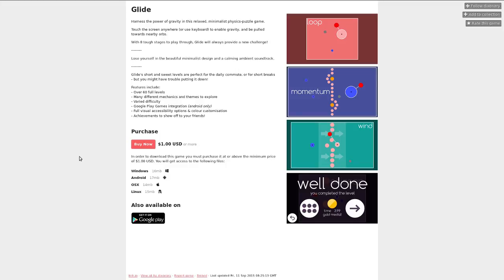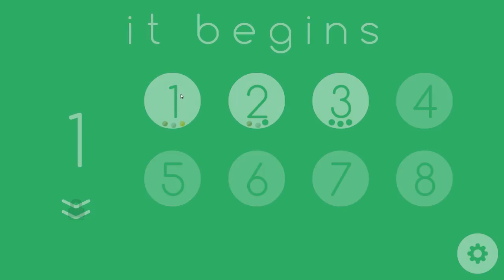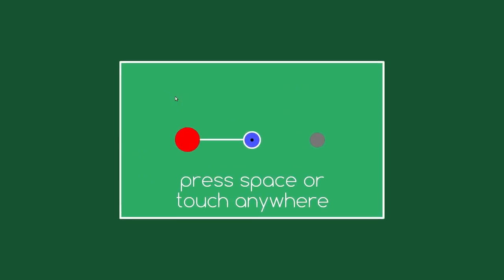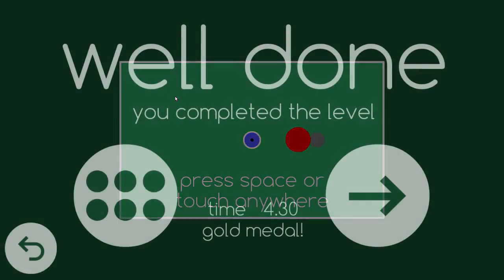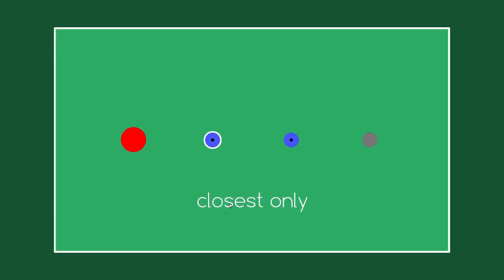Anyway, see you there and here we are. It certainly is relaxing music and very simple. Let's go on and get in the game. Alright level one, press space or touch anywhere. So these blue orb things are what have gravity and it says closest only, so only the closest one is doing stuff.